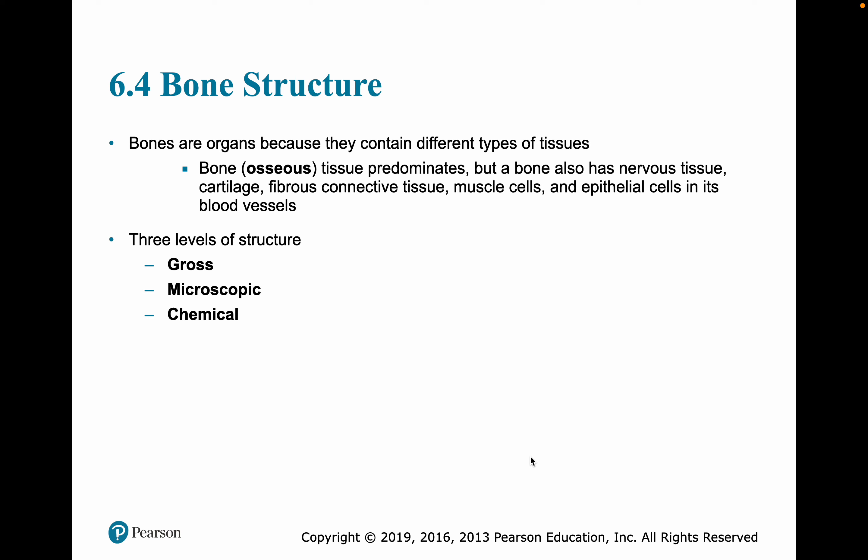Bone is an organ. It contains different types of tissues: bone or osseous tissue, which is the predominant tissue, but it also has nervous tissue, cartilage, fibrous connective tissue, muscle cells, epithelial cells, and blood vessels.